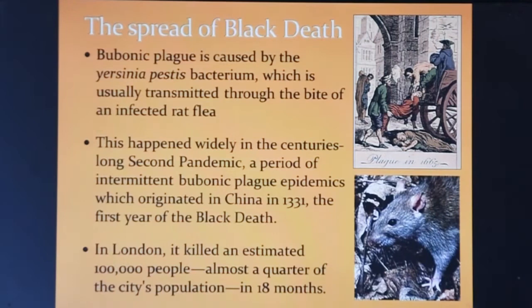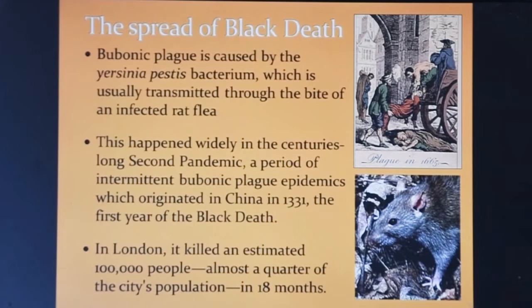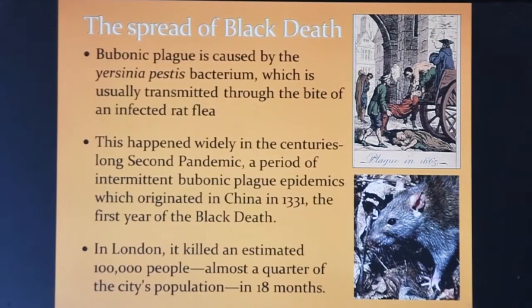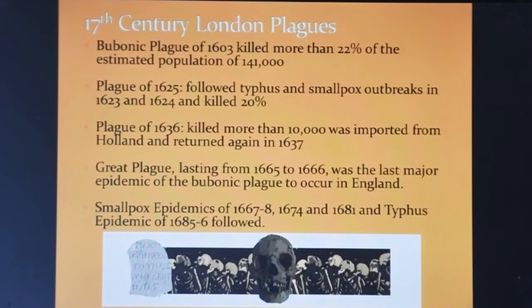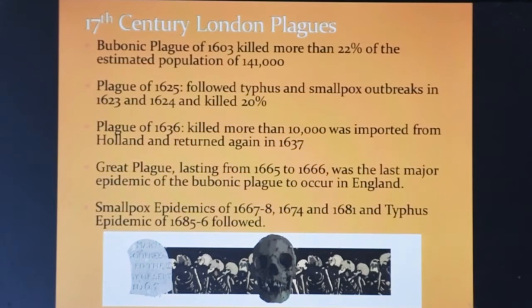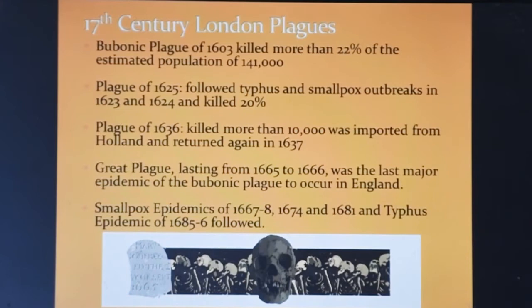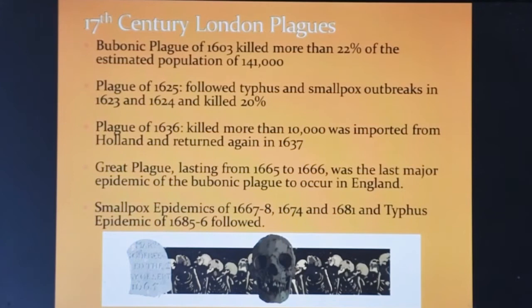Plague had originated in China in 1331 and spread across the trade routes to Western Europe in a series of intermittent epidemics. When it arrived in London, it killed nearly a quarter of London's population in 18 months. In 17th century London, there were outbreaks of bubonic plague in 1603, typhus and smallpox in 1623 and 1624. In 1636, plague imported from Holland killed 10,000 and returned again the next year. The last major bubonic plague in London lasted from 1665 to 1666, when it was thought that the Great Fire wiped out the rats and fleas that carried the disease. However, a smallpox epidemic followed in 1667, 1674, and 1681, and a typhus epidemic ravaged London in 1685.